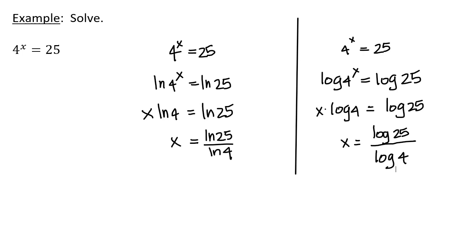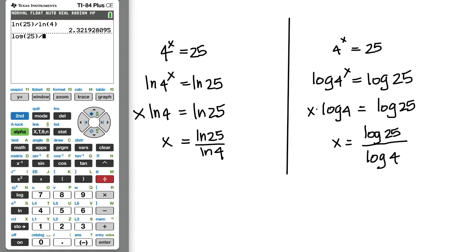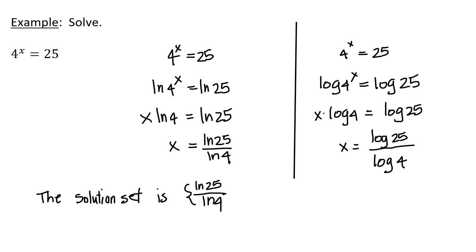Let me show you that these answers are exactly the same. The natural log of 25 divided by the natural log of 4 gives 2.3219 etc. The common log of 25 divided by the common log of 4 gives exactly the same answer: 2.321928095. So the solution set is {ln 25 divided by ln 4}.